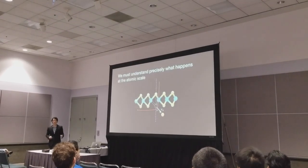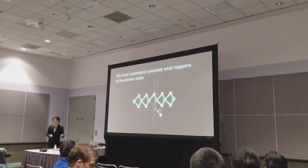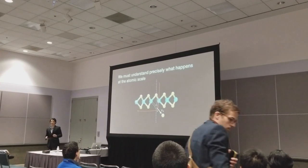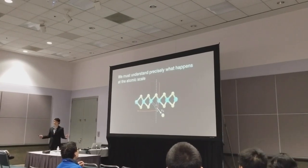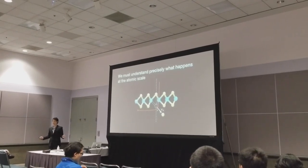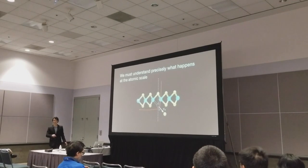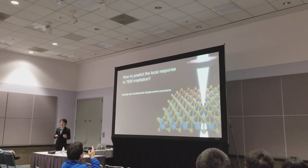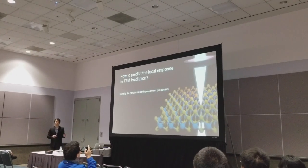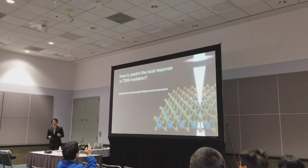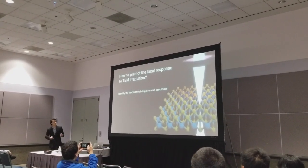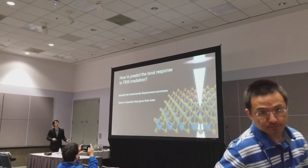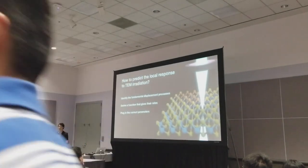In order to do this, we need a precise understanding of the interaction between an individual electron and the target atom, and then we can use statistics to figure out what happens from a larger field. So our plan of attack is straightforward. First, we need to identify the fundamental atomic displacement processes — those that are most common and most impactful. We then need a way to predict their respective rates, and then plug in the right parameters for a given process.